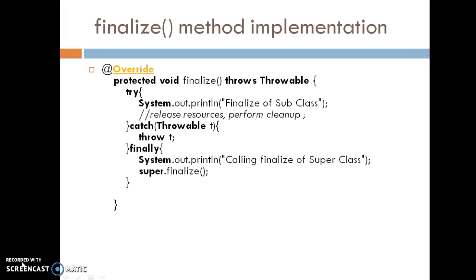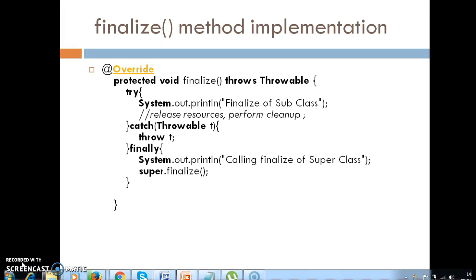To recap: the finalize method is defined in the Object class and must be overridden with a call to super.finalize(). It is called just before garbage collection, only once per object. Any exceptions in the finalize method will not be propagated. Don't write any important code in finalize, as there is no guarantee it will execute.